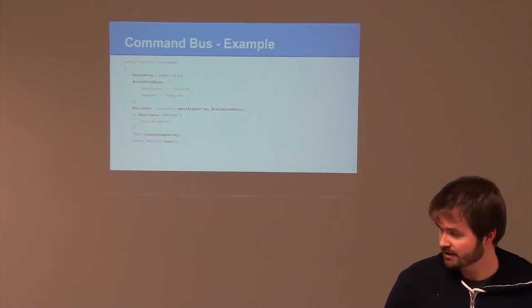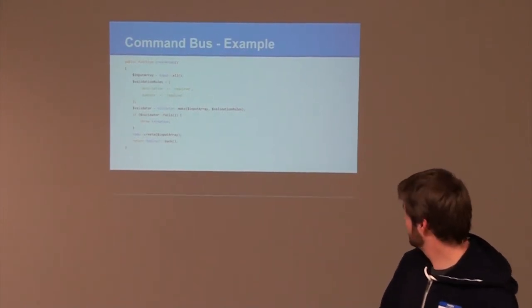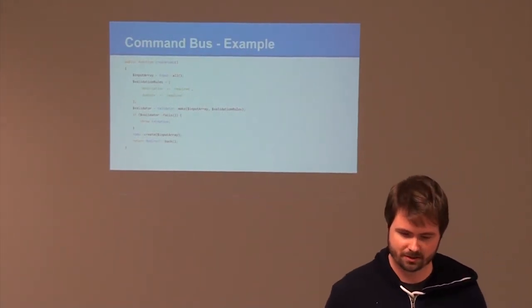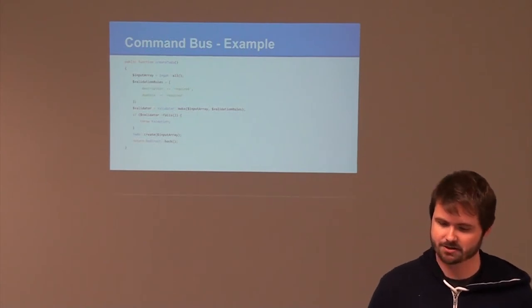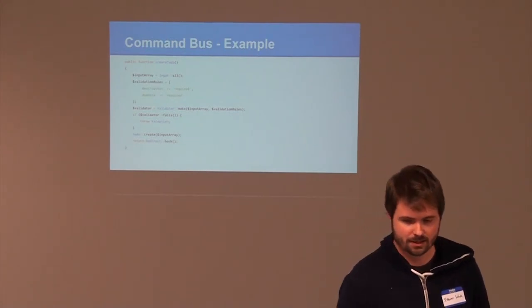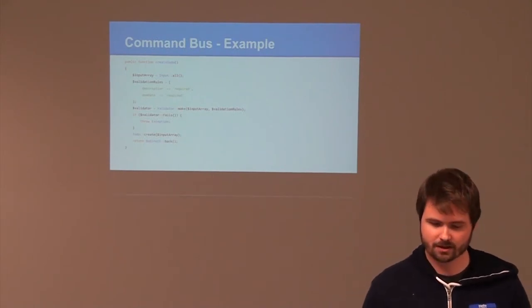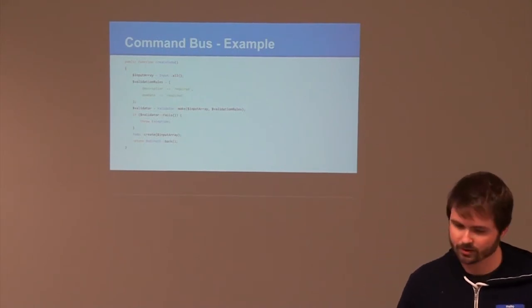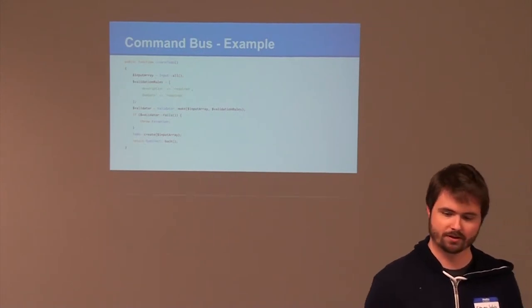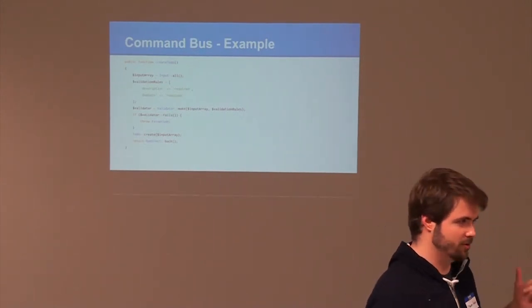So let's give an example here. In our example to-do app, we're going to gather all of our input, we're going to create our validation rules, we're going to run it through our validator, check to see if it fails. If it does, we're going to throw an exception or any kind of error we can listen to. If it passes to that point, then we can actually pass the data to our model and create the instance. But again, this is controller bloat.